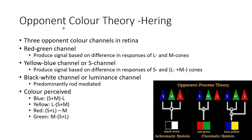Now let us discuss about opponent color theory, which was proposed by Hering. According to this theory, there are three opponent color channels in the retina: the red-green channel, the yellow-blue channel, and the black-white channel or luminous channel. The red-green channel produces a signal based on the difference in responses of L and M cones. The yellow-blue channel produces a signal based on the difference in responses of S and L plus M cones. The black-white channel is predominantly rod mediated.